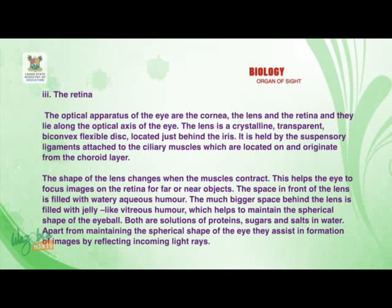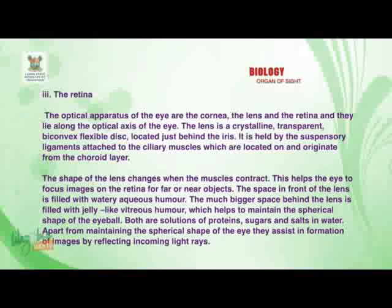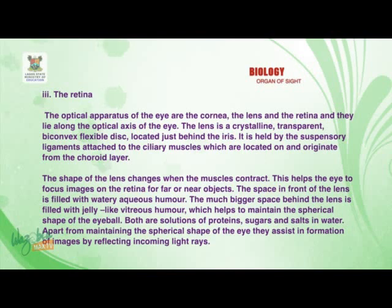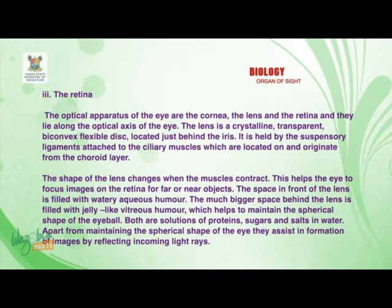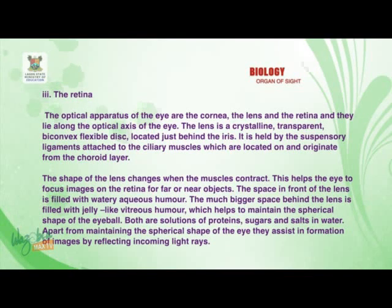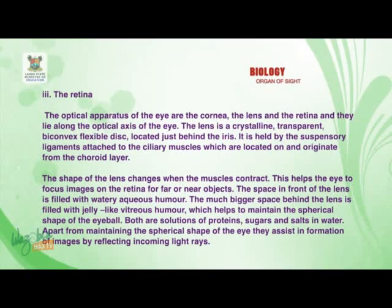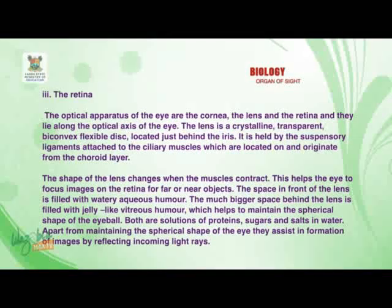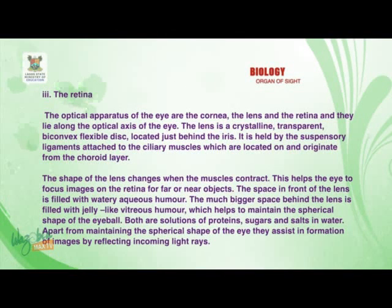The space in front of the lens is filled with watery aqueous humor. The much bigger space behind the lens is filled with the jelly-like vitreous humor, which helps to maintain the spherical shape of the eyeball. Both are solutions of proteins, sugars, and salt in water. Apart from maintaining the spherical shape of the eye, they assist in image formation by refracting incoming light rays.